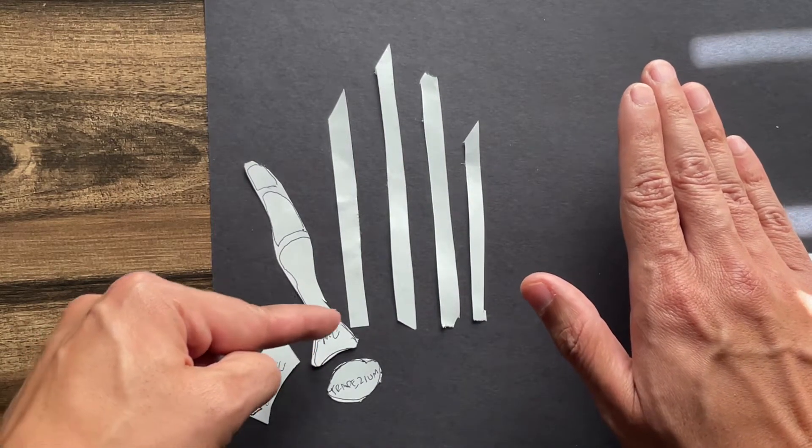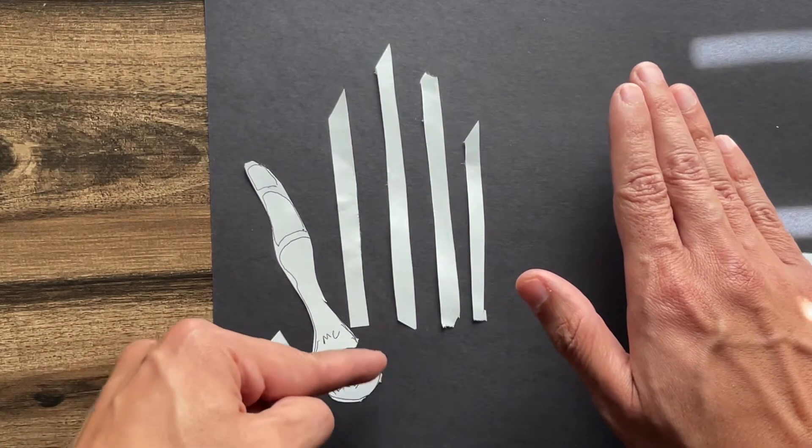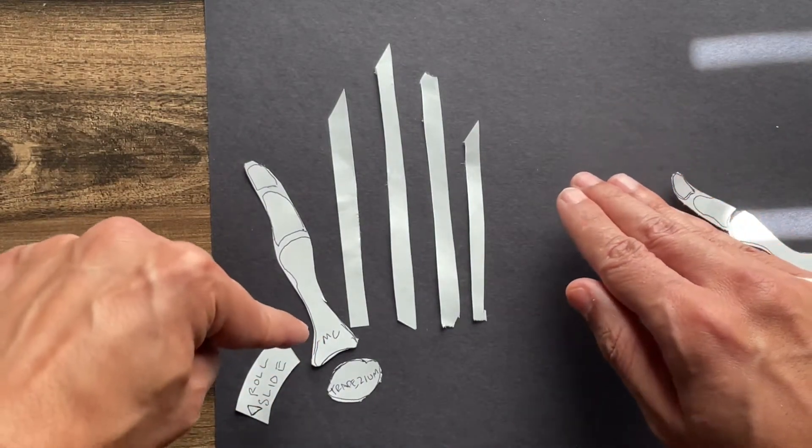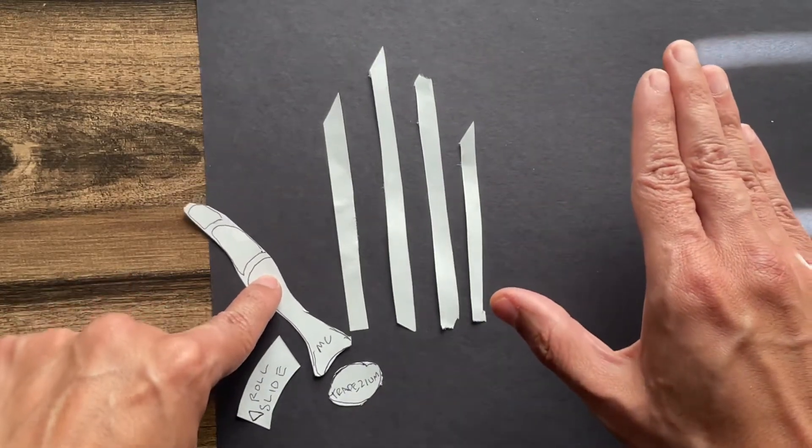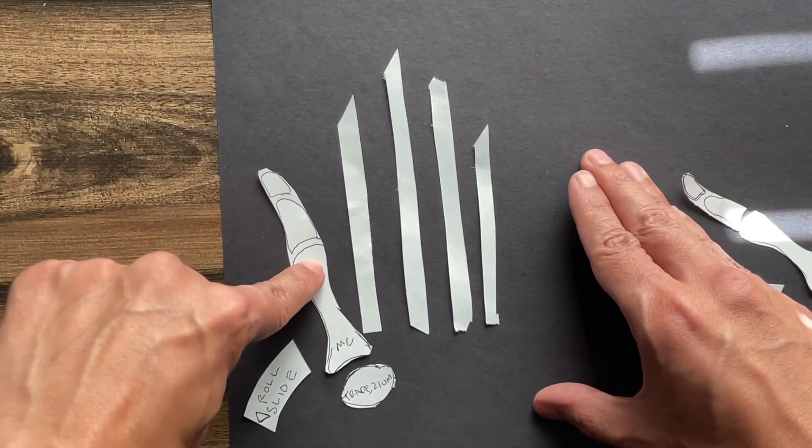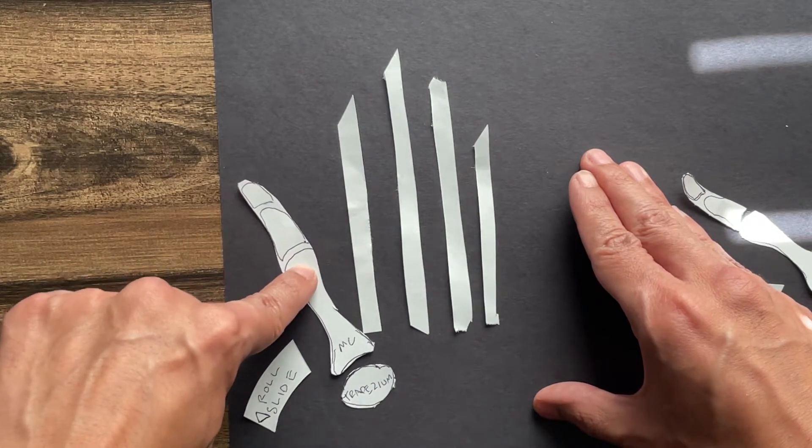You see it's concave and the trapezium is going to be convex. So it's going to roll and slide in the same direction because of the way that it is shaped.